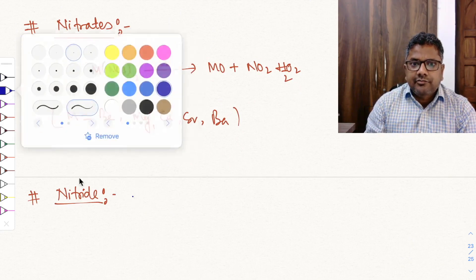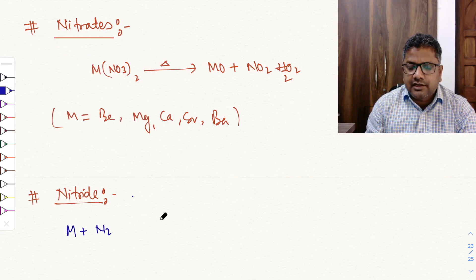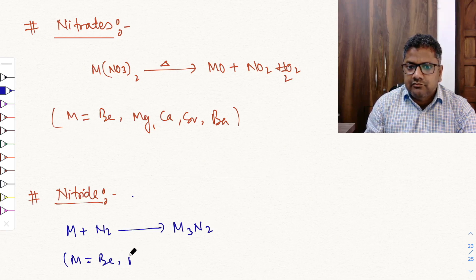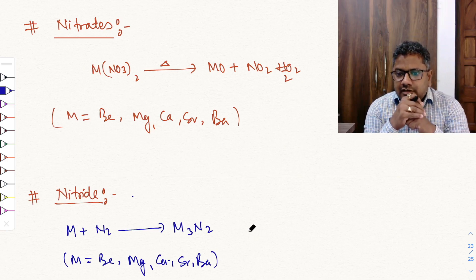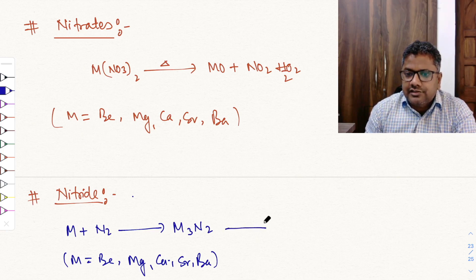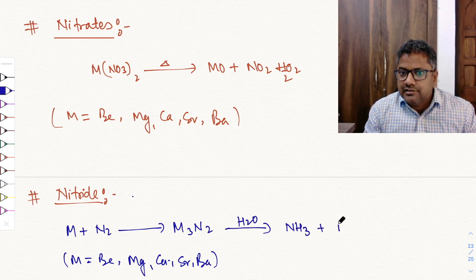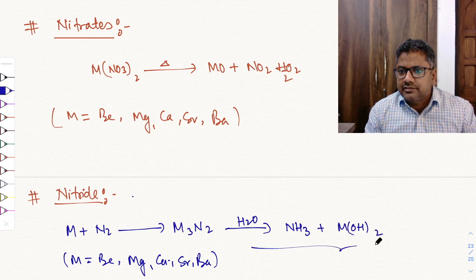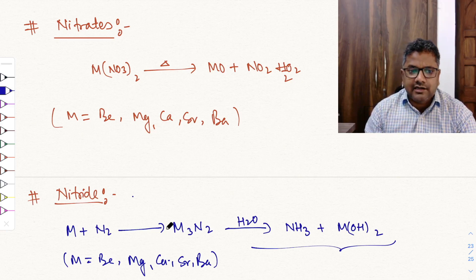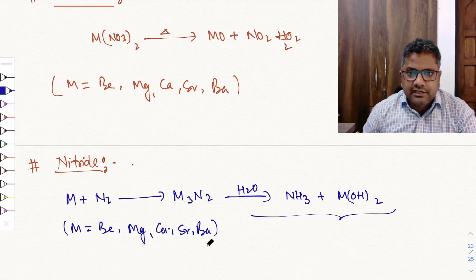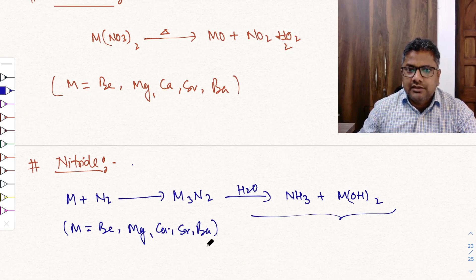All alkaline earth metals react with nitrogen and form nitrides of M3N2 type. These are ionic compounds. On hydrolysis (reaction with water), they give ammonia gas plus metal hydroxide. The tendency to form nitrides gradually decreases down the group.